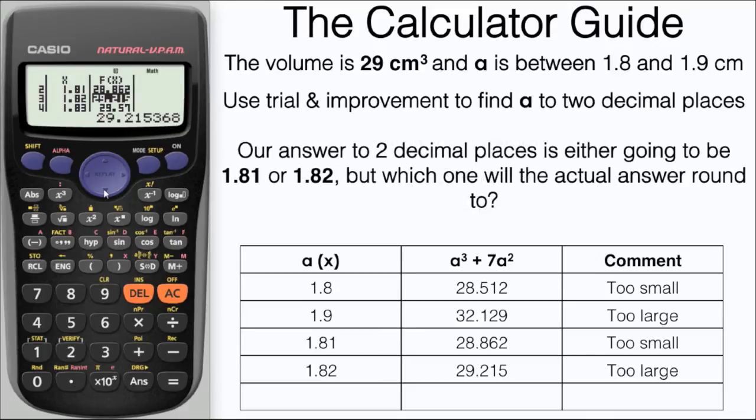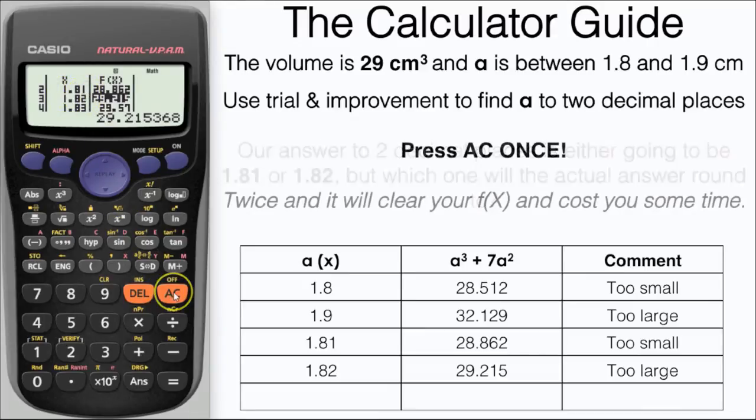Our answer to two decimal places will either be 1.81 or 1.82, which will it round to? We need to do one more trial.